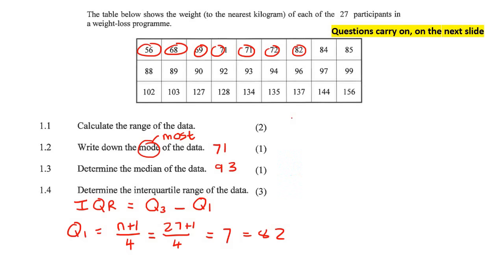The formula for Q3 is also n plus 1 over 4, but then you multiply that with a 3, like that. So that's going to end up giving us, if you had to go work it all out, you should get 21. That's not the answer. That's the position. So we go to position number 21. It should be 19, 20, 21. It should be this one over here, 127.